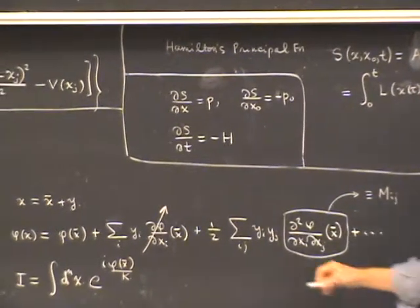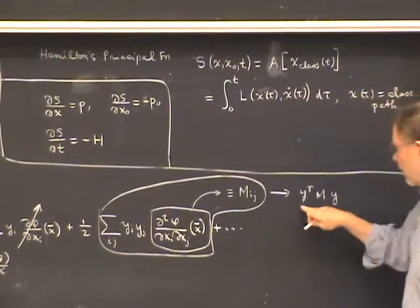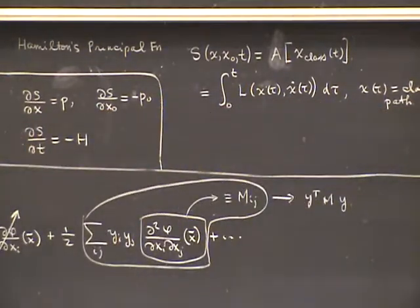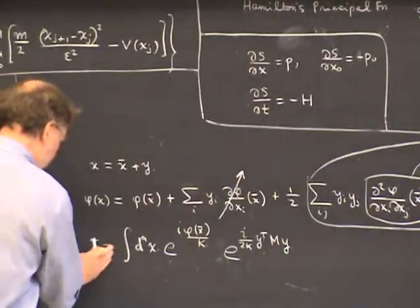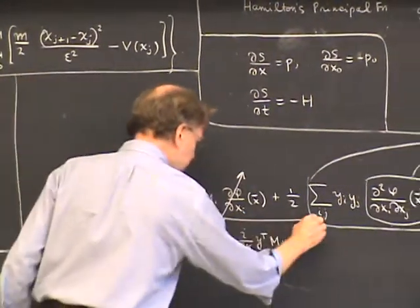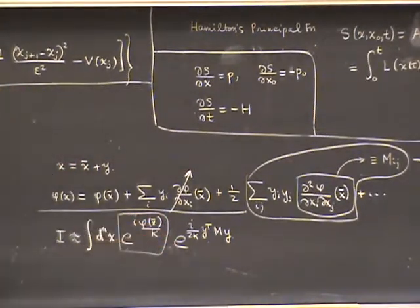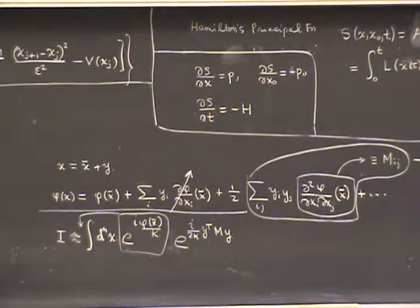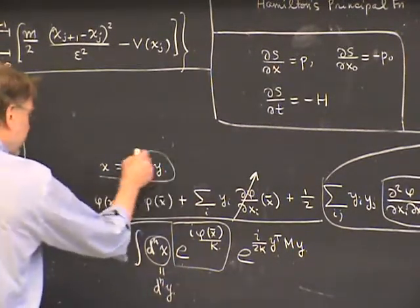Writing the second-order expression as y^T M y, where y is viewed as an n-dimensional vector sandwiched around matrix M, the integral becomes e^{i phi(x-bar)/kappa} times e^{i/(2 kappa) y^T M y}. This is an approximation because we truncated the expansion at second order. The first factor, evaluated at the stationary phase point, is just a constant and can be taken out of the integral. The remaining integral is a multidimensional Gaussian integral with matrix M and a purely imaginary exponent. The measure d^n x equals d^n y since x and y differ only by a shift.